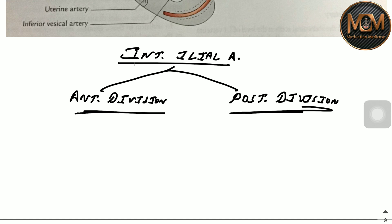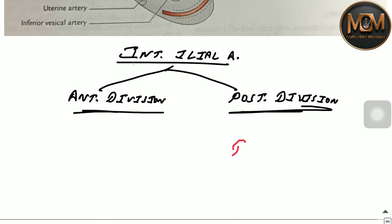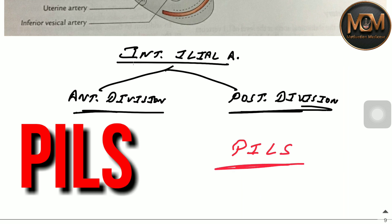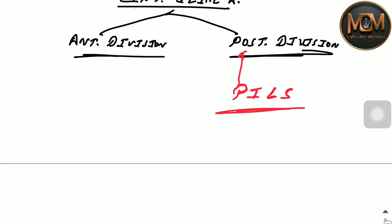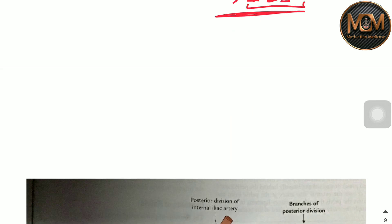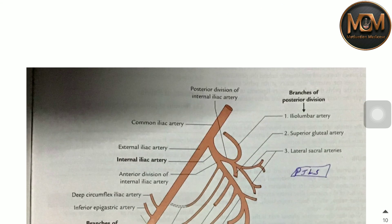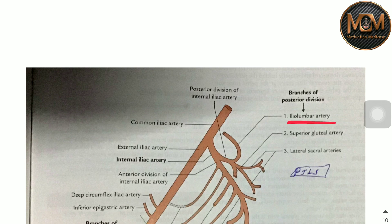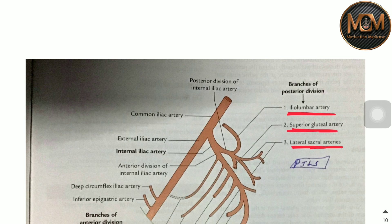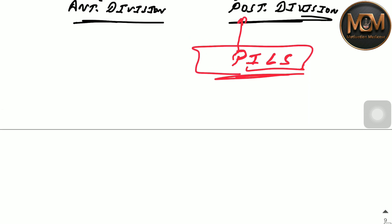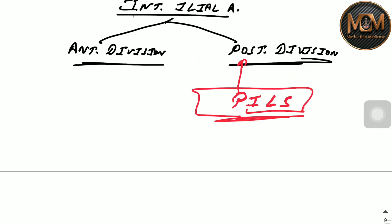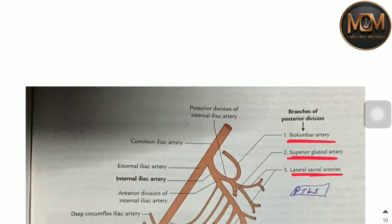To remember the branches of the posterior division, just remember the mnemonic 'PILLS.' P indicates the posterior division. I stands for iliolumbar artery, L stands for lateral sacral artery, and S stands for superior gluteal artery. With this simple mnemonic, we have covered all the branches of the posterior division of the internal iliac artery.